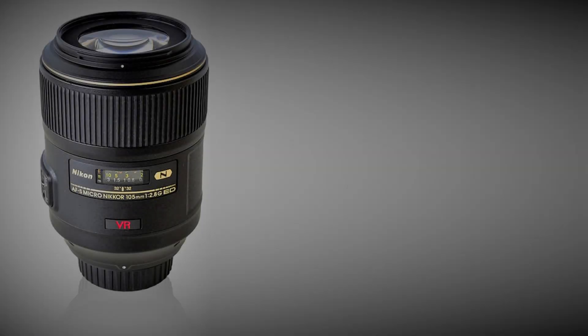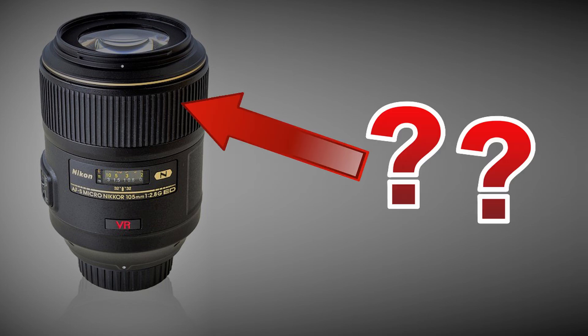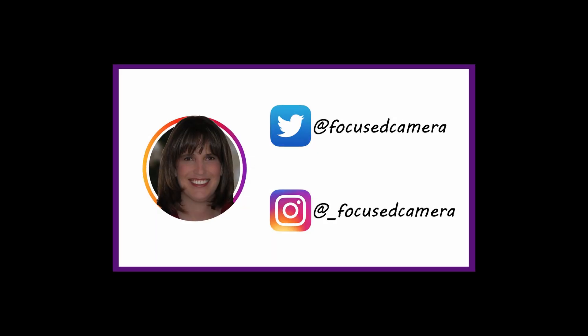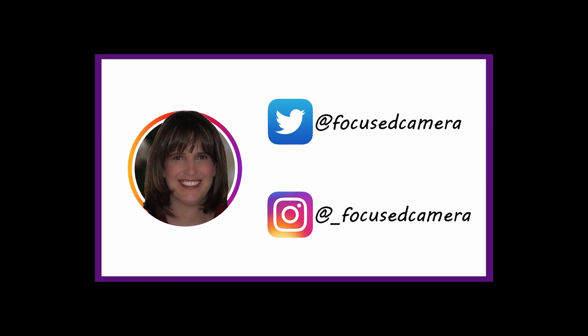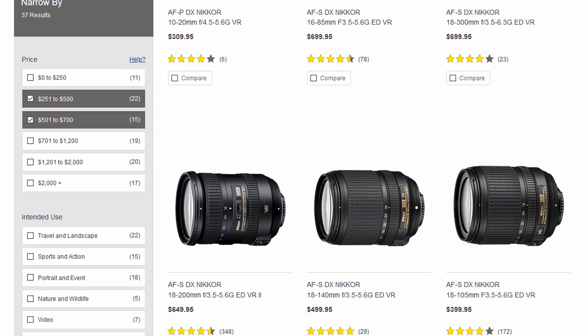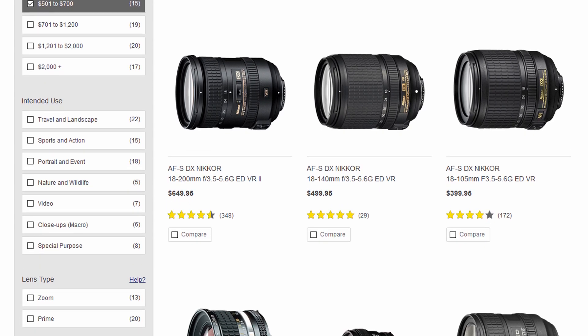You're standing in the electronics department looking at a camera lens that you might want to buy. The lens description looks like alphabet soup or maybe a secret code — AF-S? 105 millimeter? F 2.8? What do all those letters and numbers mean? I'm Cheryl with Focus Camera. In this video I'm going to go through the basics for Nikon so when you go shopping for a lens you can buy with confidence.